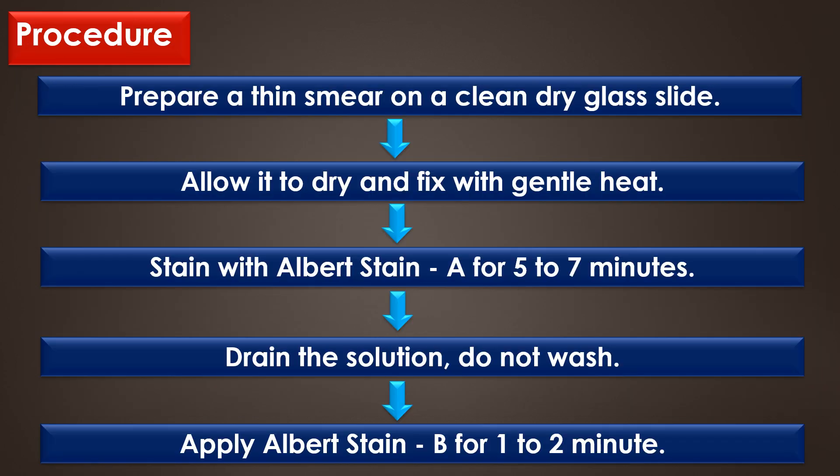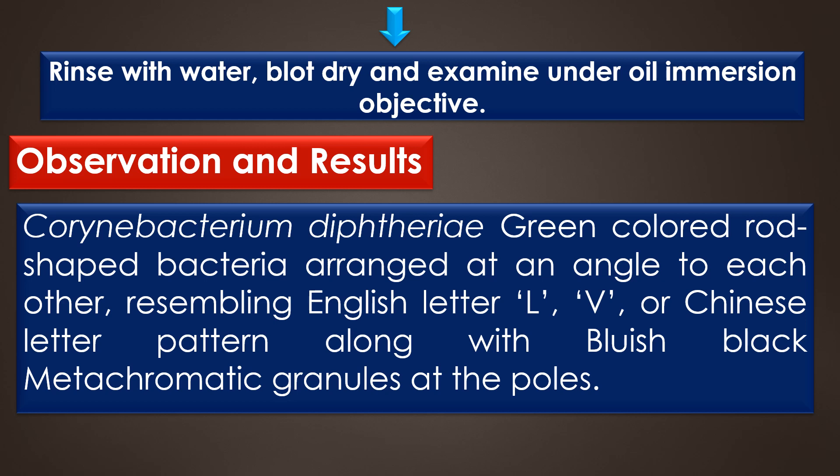The procedure: First, prepare a thin smear on a clean dry glass slide and allow it to dry and fix with gentle heat. Then stain with Albert stain A for 5 to 7 minutes, drain the solution, and do not wash. After that, apply Albert stain B for 1 to 2 minutes. Finally, rinse with water, blot dry, and examine under the oil immersion objective.